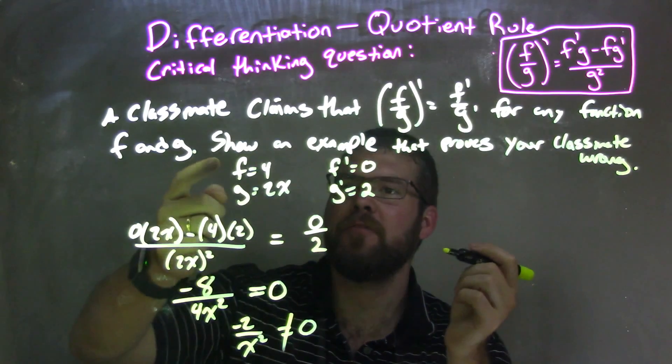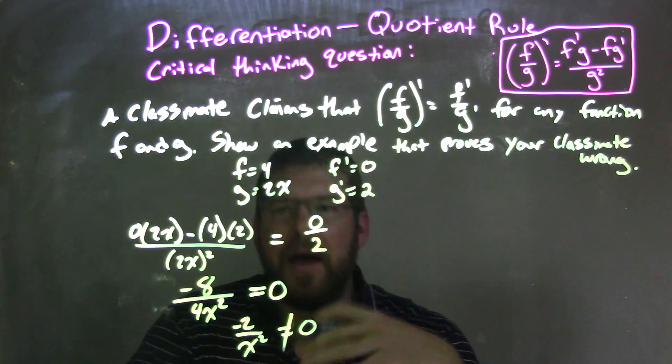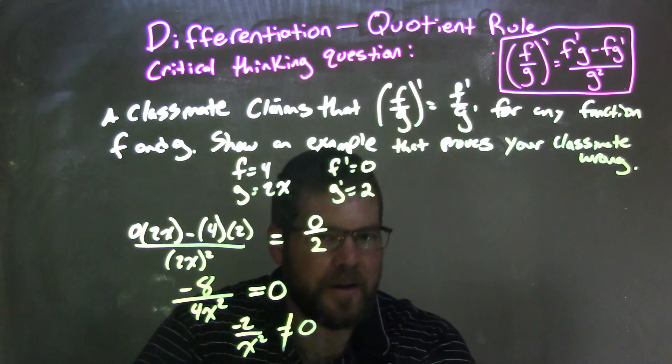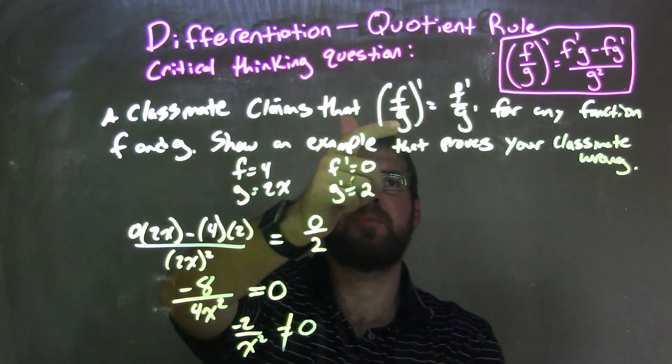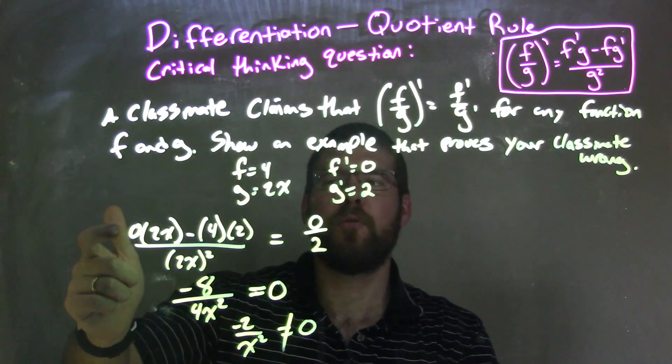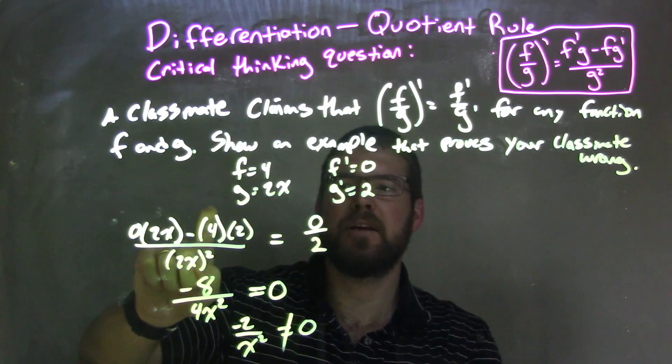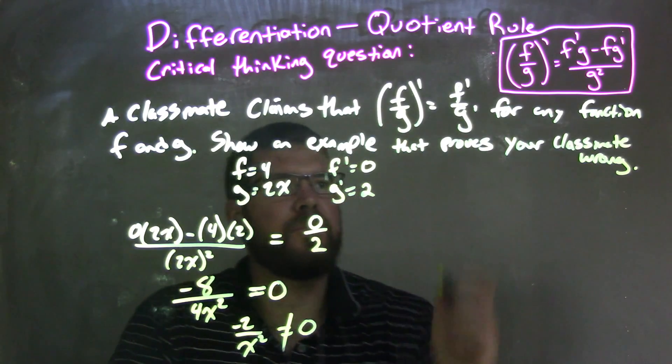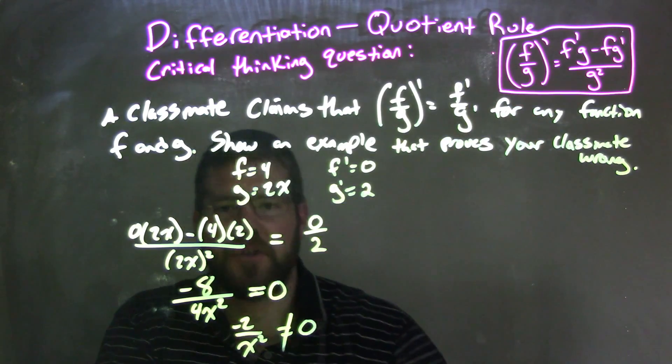So I picked f to be 4, g to be 2x, and I found f prime to be 0 and g prime to be 2. So keep it simple when you're picking these, right? Don't leave for a really complicated problem here. So then I saw this f over g prime was really the quotient rule, so I wrote out the quotient rule here to be f prime times g minus f times g prime all over g squared, and I set that equal to what our classmate said to be f prime over g, f prime being 0 over g to be 2.